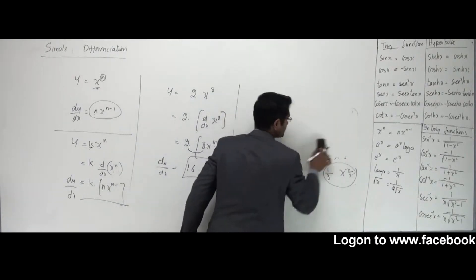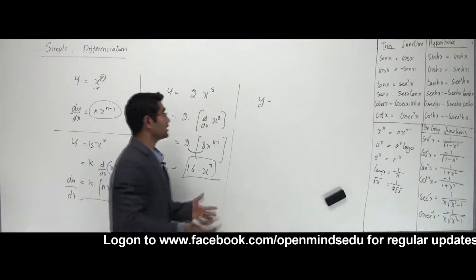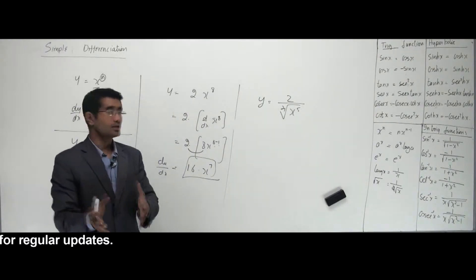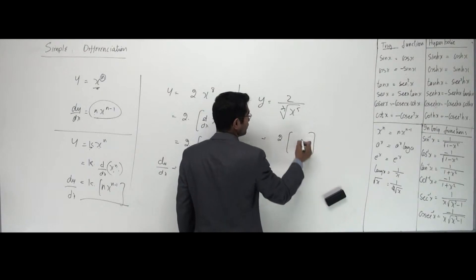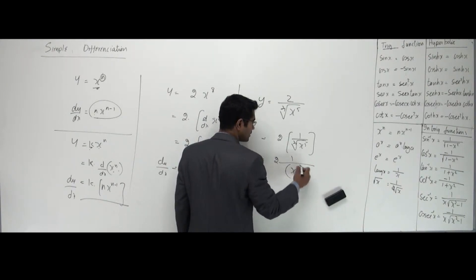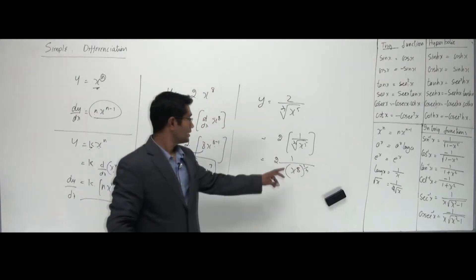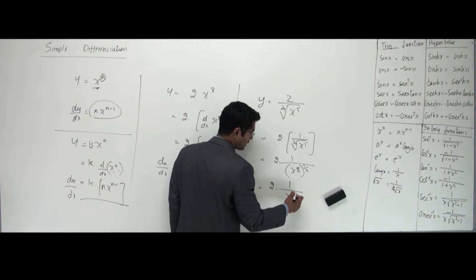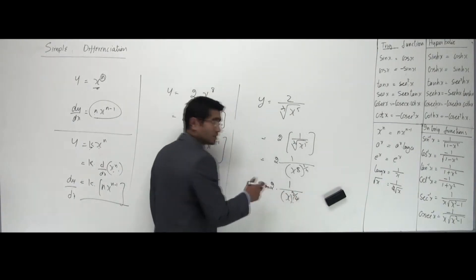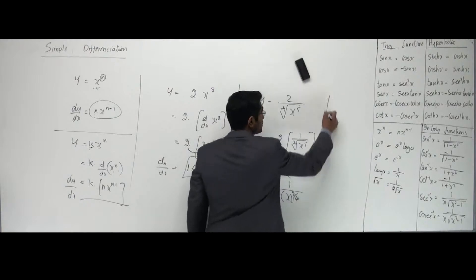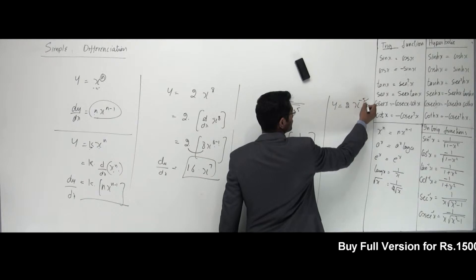Now let's talk about more forms. Let's say I have 2 divided by 4th root of x to the power 5. This doesn't look like the standard form. First, the 2 goes outside. Then 1 by 4th root of x to the power 5 — I can write x to the power 5 to the power 1 by 4, that is x to the power 5 by 4 in the denominator. So I have 2 into 1 by x to the power 5 by 4. This is still not in my standard form because x is in the denominator.